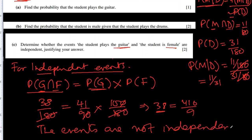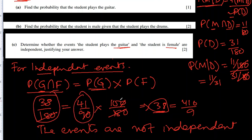If you're not comfortable with exact fractions, you can convert to decimals — both sides are probabilities. Multiplying them, you can see clearly they are not equal.